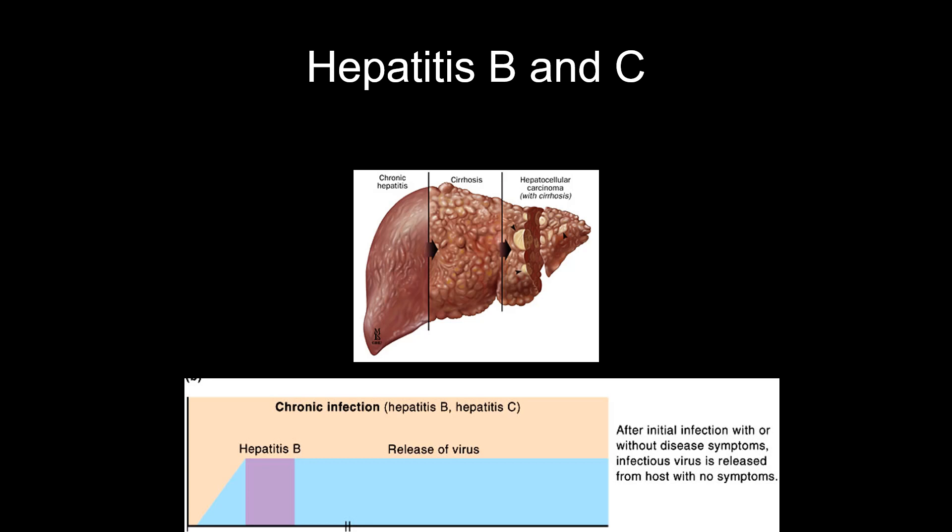Hepatitis B and C are both chronic infections affecting hepatocytes. They both cause hepatitis — inflammation of the liver — which if untreated can lead to cirrhosis (death of the liver) and increased risk of liver cancer. There is now a treatment for Hep C, though it's very expensive. We do not currently have a cure for Hep B. There is a vaccine for Hep B.